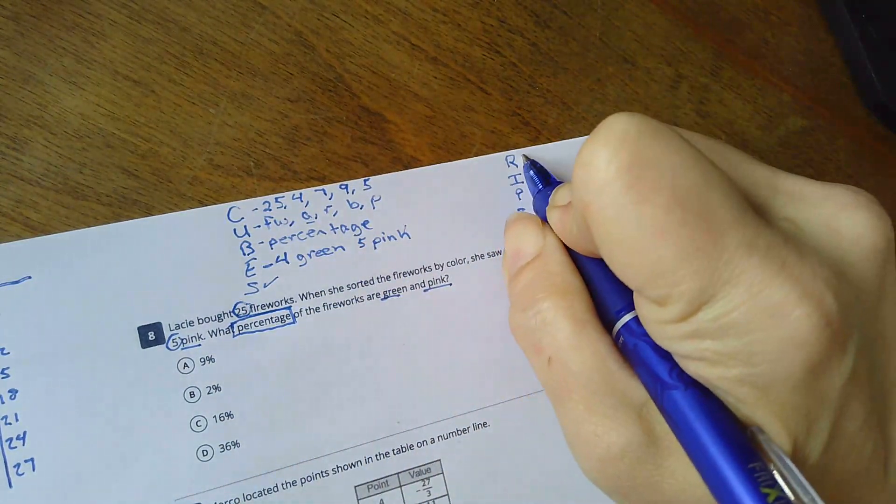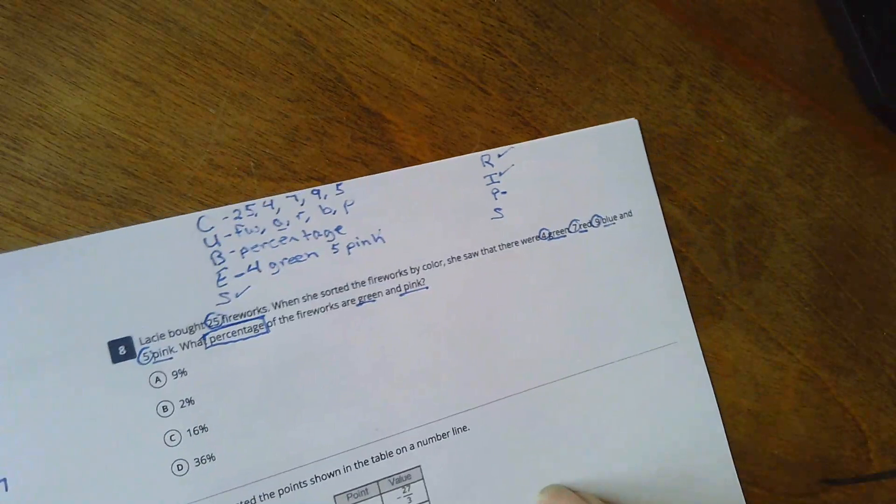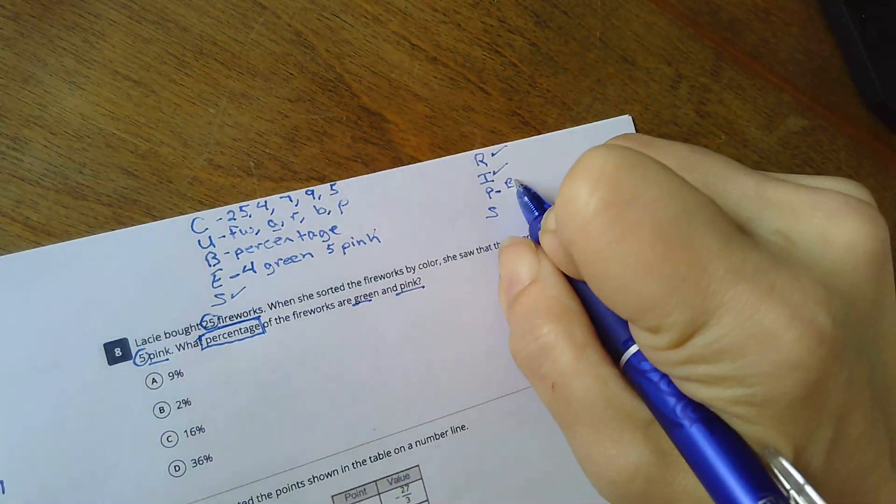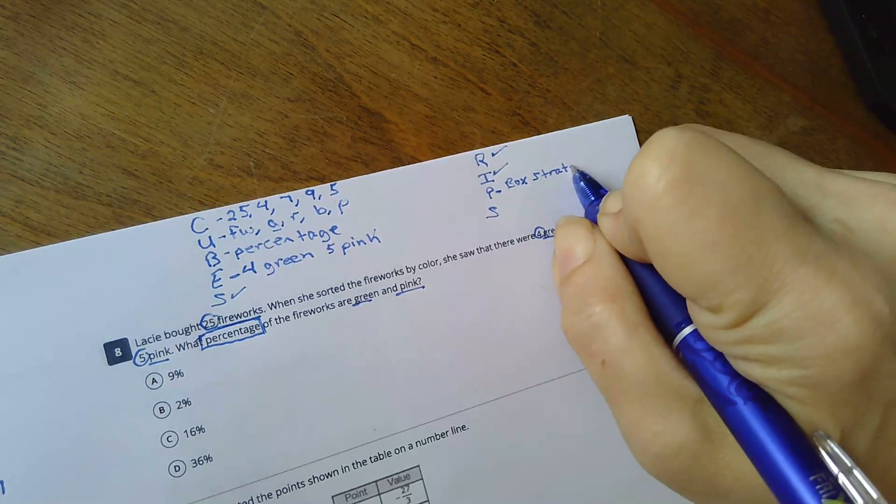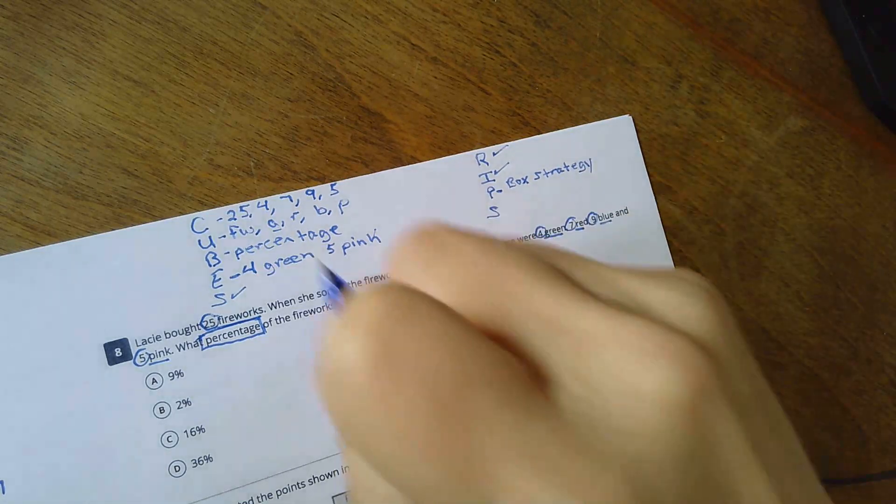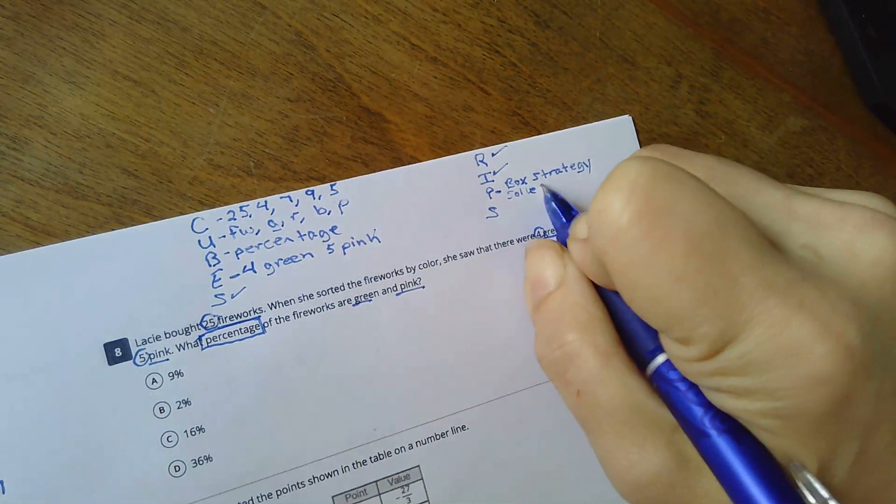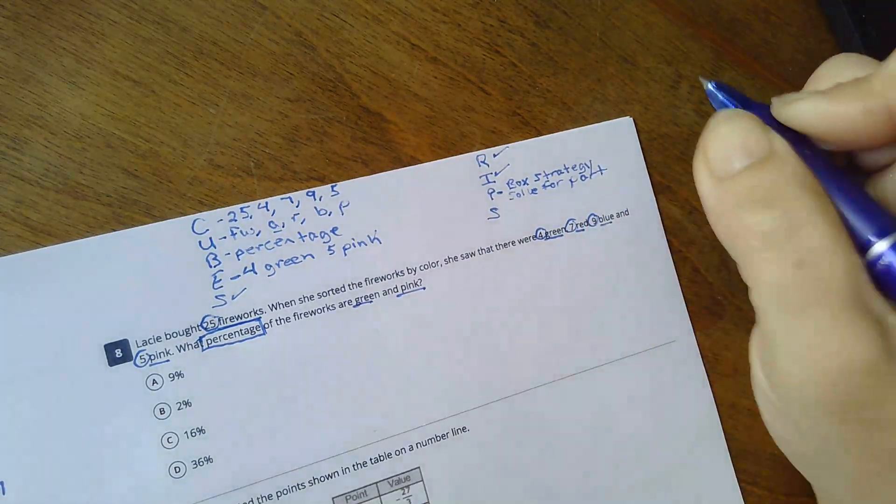And so now I can solve it. But before I do, I made sure I read it. I pulled the information. What is my plan? Well, I need to use the box strategy. I also need to find my part before I can solve the entire question.